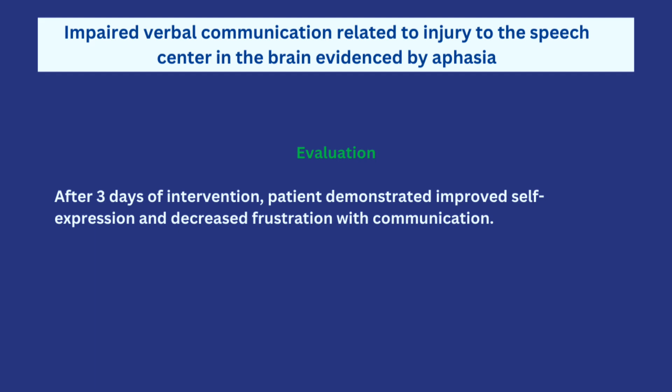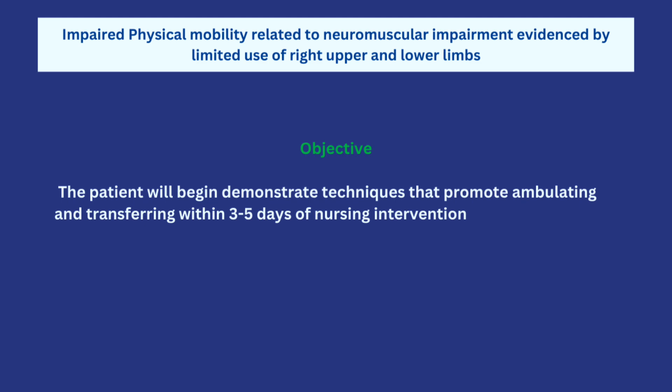The next nursing diagnosis we'll be working on is impaired physical mobility. The objective is that the patient will begin to demonstrate techniques that promote ambulating and transferring within three to five days of nursing intervention. We're not saying they will start moving independently, but they will start demonstrating the techniques. That timeframe is realistic, and it is very important to know how to construct your objectives and make them realistic.